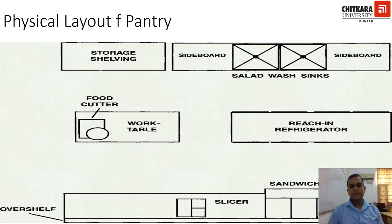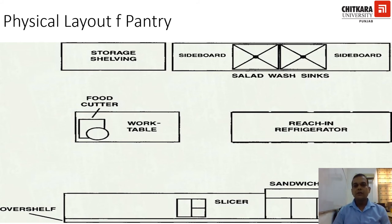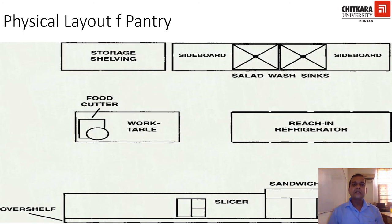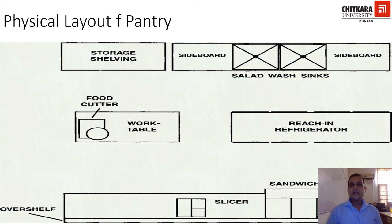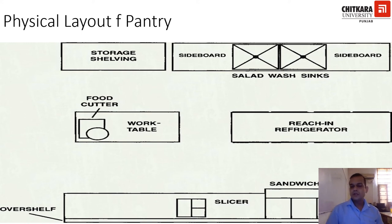Moving forward, the picture shows a layout of a pantry — a prototype of how the pantry should look. A pantry is located in the back area of the restaurant and is where food items not provided directly by the kitchen are obtained: pastries, ice cream, sandwiches, salads. The pantry is laid out in a specific manner for smooth service and includes storage shelving areas, a sideboard, salad washing area, a refrigerator, a work table for cutting food, a slicer machine, and a sandwich maker.